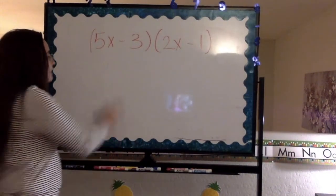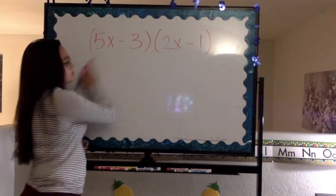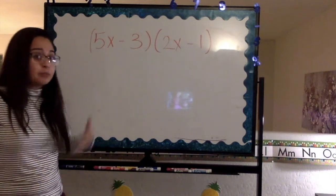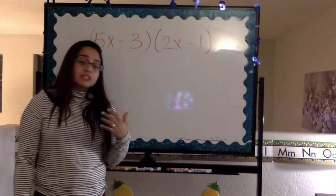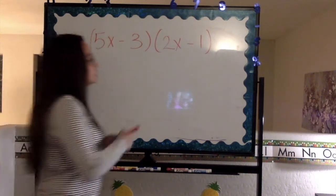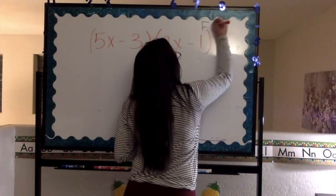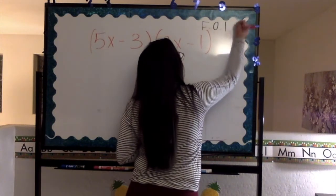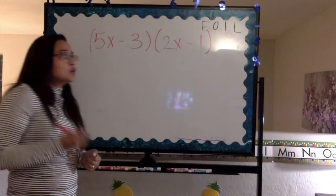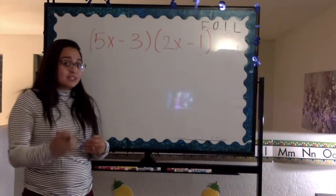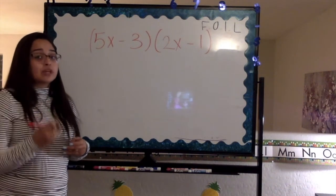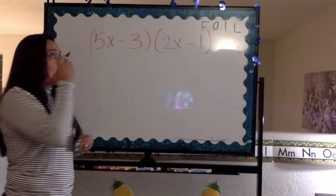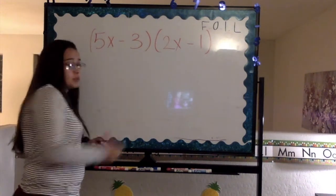Here, we have two binomials. And as you can tell, because of the parentheses, we're going to be multiplying them. I'm going to be multiplying them by using FOIL. Remember how I said it's first outer inner last? That is literally the order that we're going to be multiplying our monomials by.